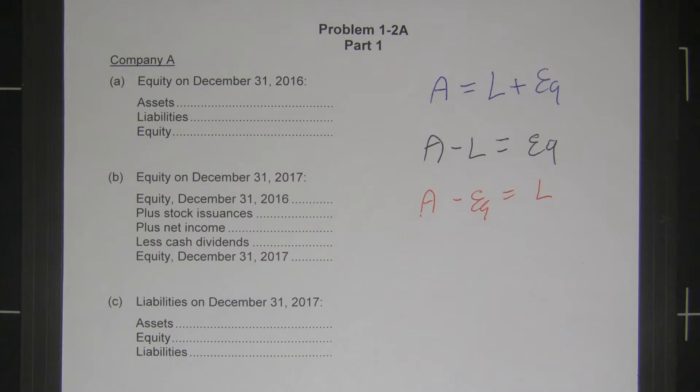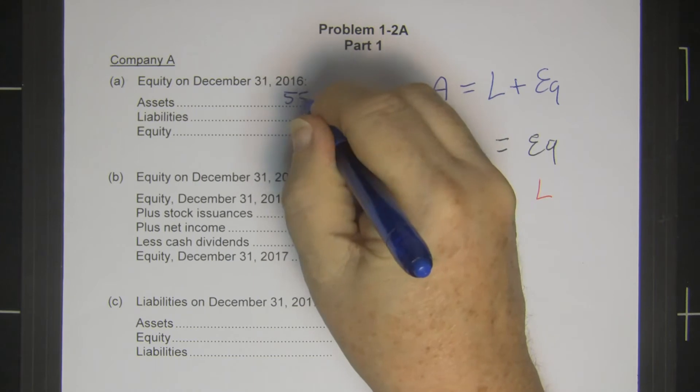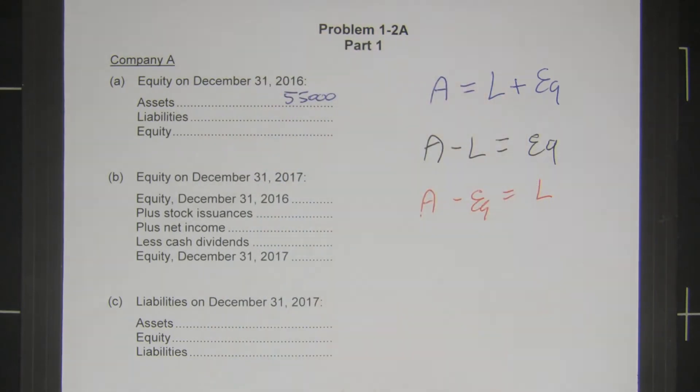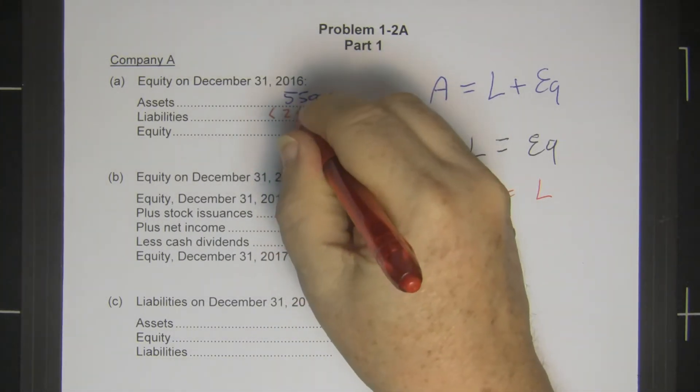In part A, they tell us that this company has $55,000 in assets, so let's write that in. Then they tell us that we have $24,500 in liabilities, so we need to subtract that.